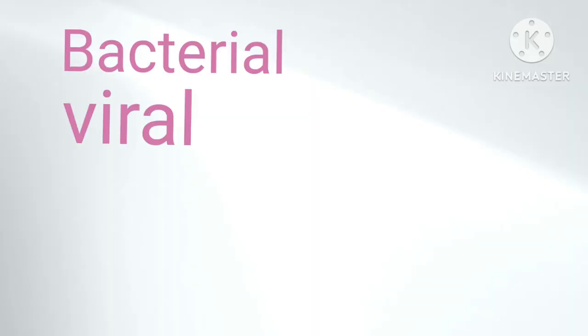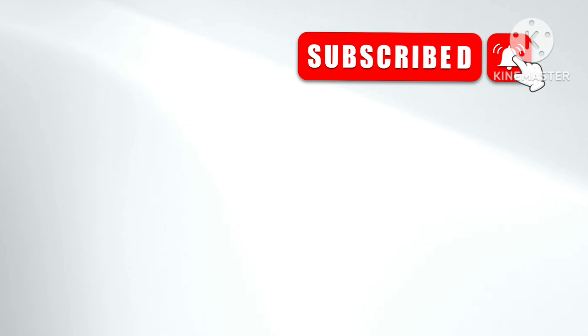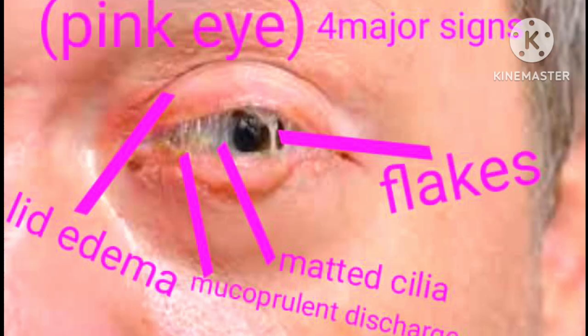But bacterial, viral, and allergic conjunctivitis do have different manifestations, which will be made clear in the next video. Bacterial conjunctivitis is an inflammatory disease of the conjunctiva and is one of the most commonly encountered eye diseases in clinical practice. These are the four major signs usually seen in patients with bacterial conjunctivitis, which are easily identifiable as you can see.